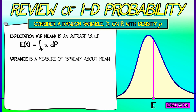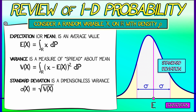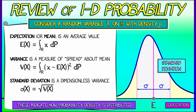Variance is a measure of how spread out the probability density is about the mean. This quantity V(x) is the integral over the reals of (x minus E)² dP — you take the distance to the mean, square it, and integrate with respect to probability density. What's often used is the standard deviation, which is by definition the square root of the variance. A small variance means you're really tight about the mean; a large variance means you're really spread out. These quantities — expectation, variance, standard deviation — are super important and we're going to see them a lot.